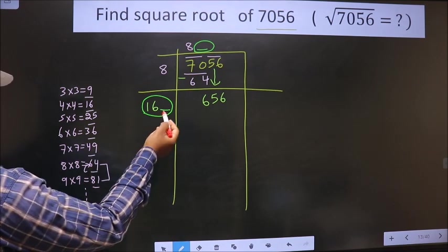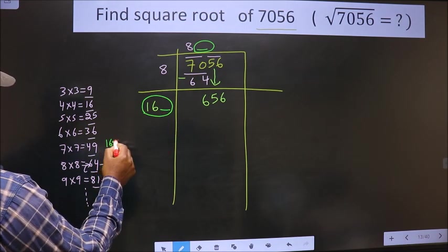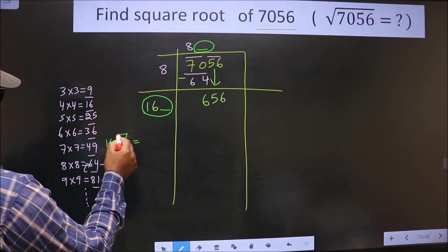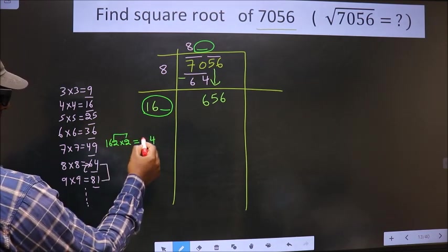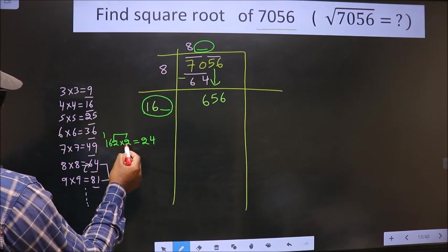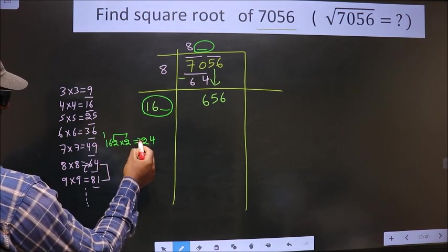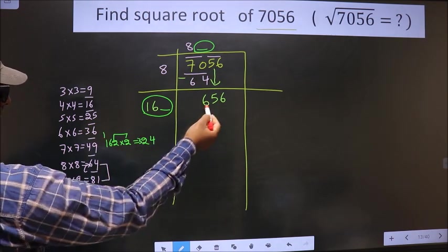So let us find the number here. If I take 2, 162 into 2. These two numbers should be same. 2 into 2 is 4. 2, 6, 12. So 2, 1, 2 and 1, 3. We get 324 which is far from this.